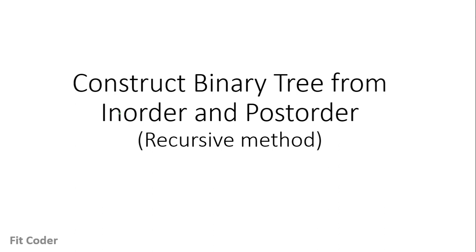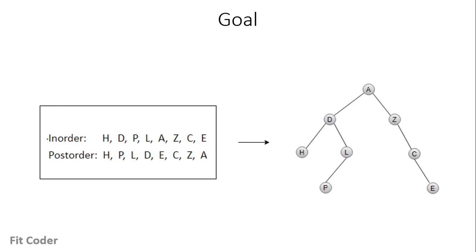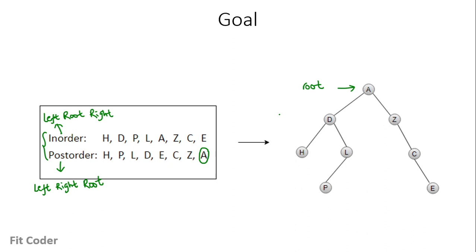In this video we will see how we can construct a binary tree from a given inorder and postorder traversal. As we know, inorder is left, root, and right — first we visit the left subtree, then the root, and at the last the right subtree. Postorder is left, right, and then root. So in postorder traversal the last node gives us the root of the tree. In this example, A is the root of the tree, and using these inorder and postorder properties we have to construct this binary tree.